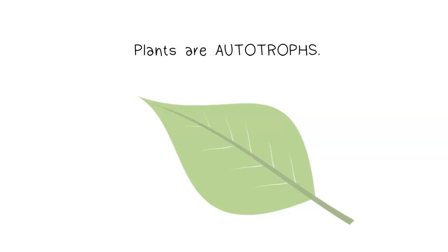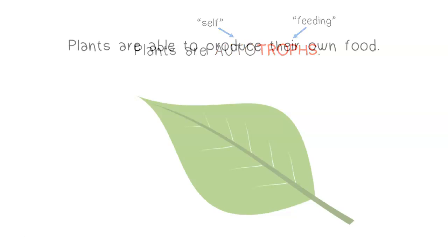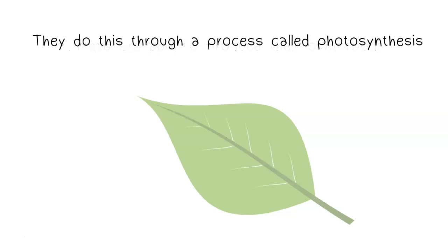Plants are autotrophs. If we break this word down, it tells us that plants are self-feeding organisms. Plants are able to produce their own food. They do this through a process called photosynthesis.